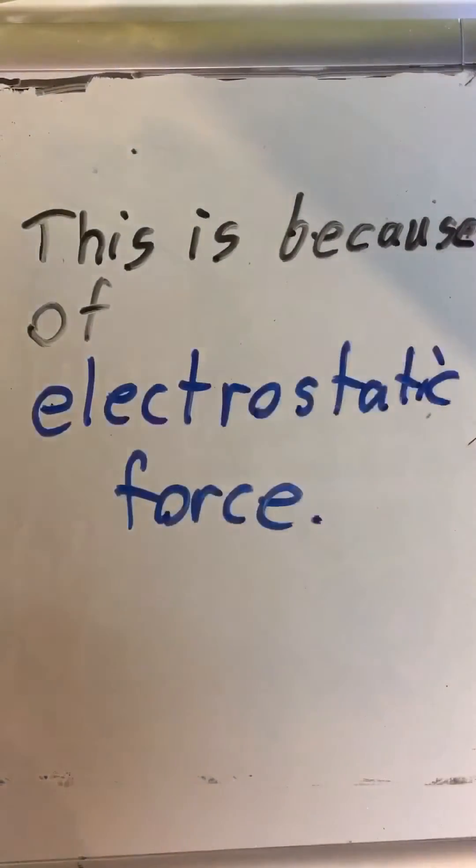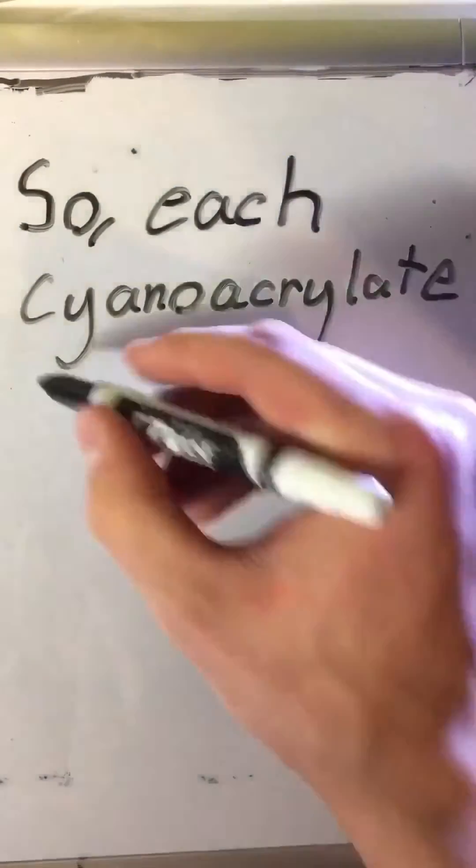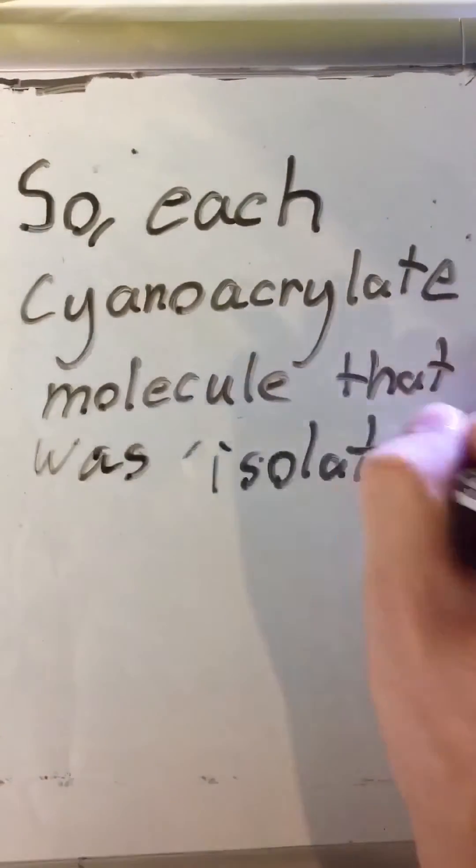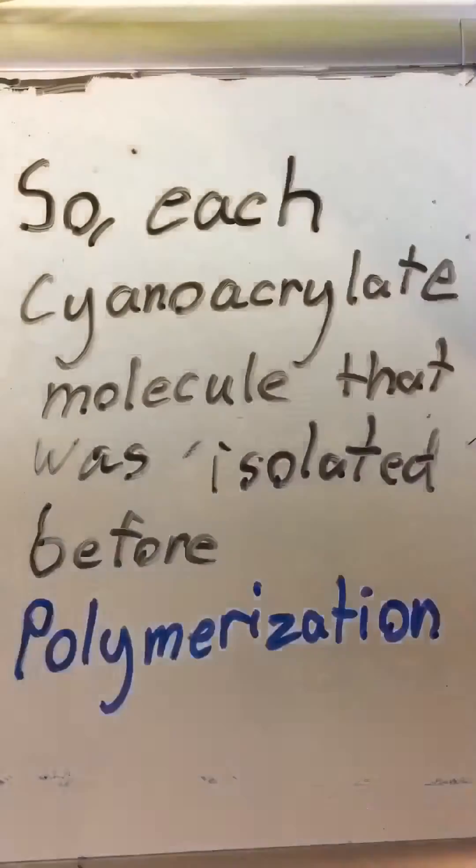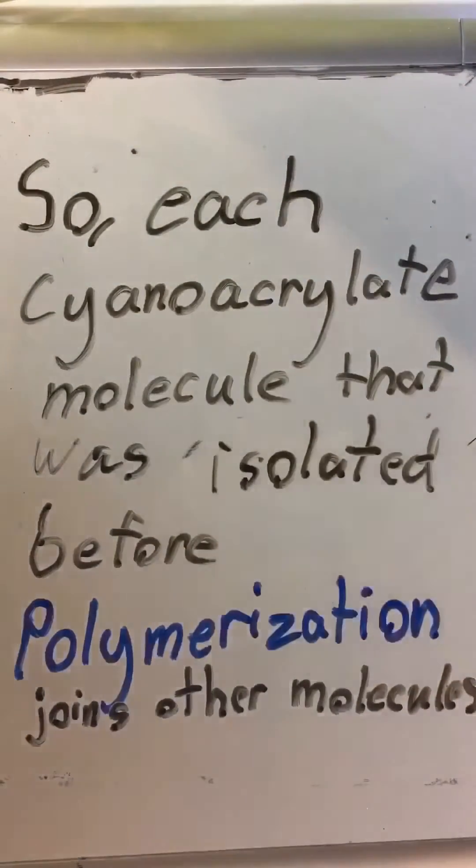This is because of an electrostatic force that attracts monomers to the polymers. So, each cyanoacrylate molecule that was isolated before the polymerization wants to join the other molecules to form a longer polymer chain.